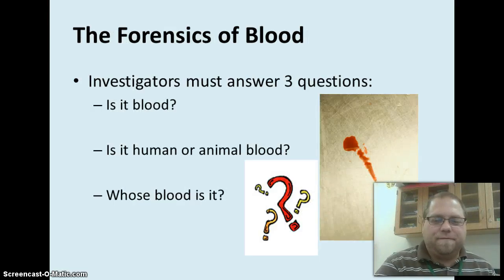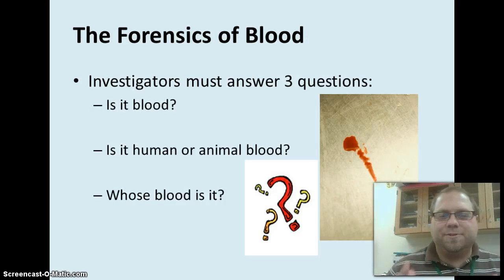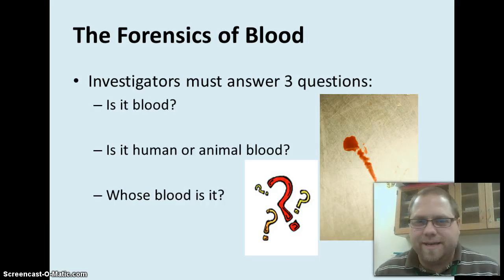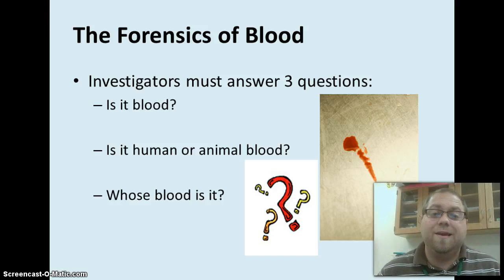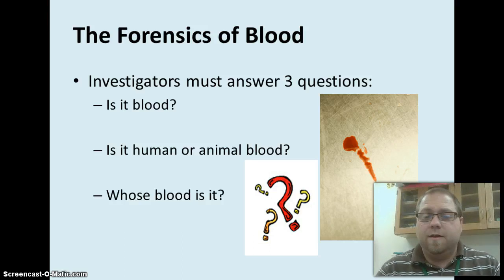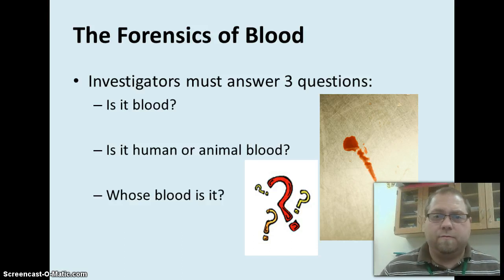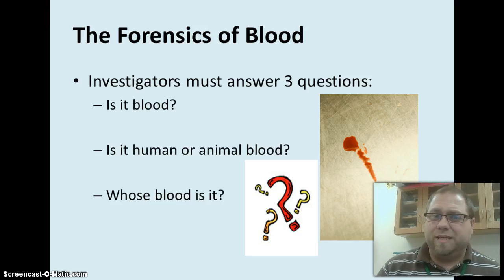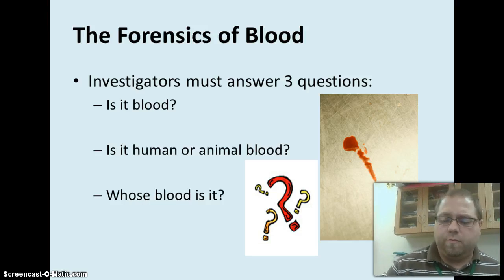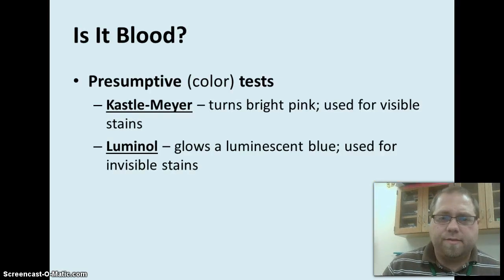So let's get into forensics a little bit. There are three questions an investigator must ask. One, is something actually blood and not just a particular stain or paint or something along those lines? Two, is it human or animal blood — does it actually belong to whoever was attacked, or did it belong to a pet, or the steak you dropped on the floor? And then three, whose blood is it?